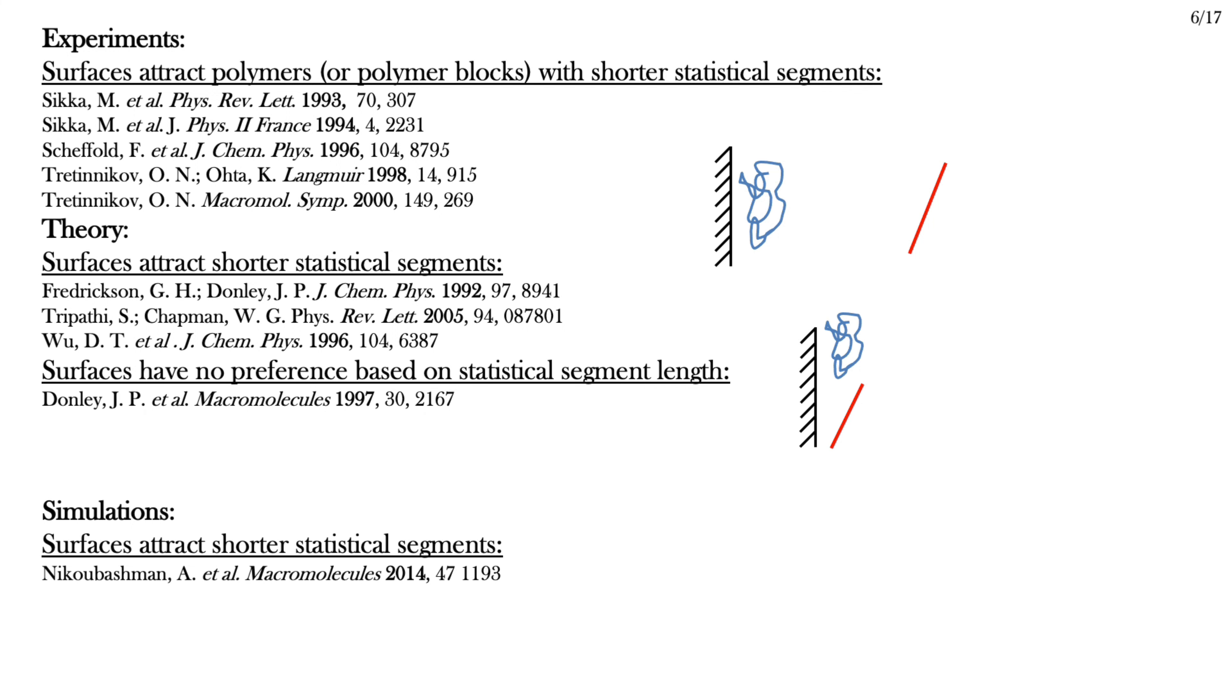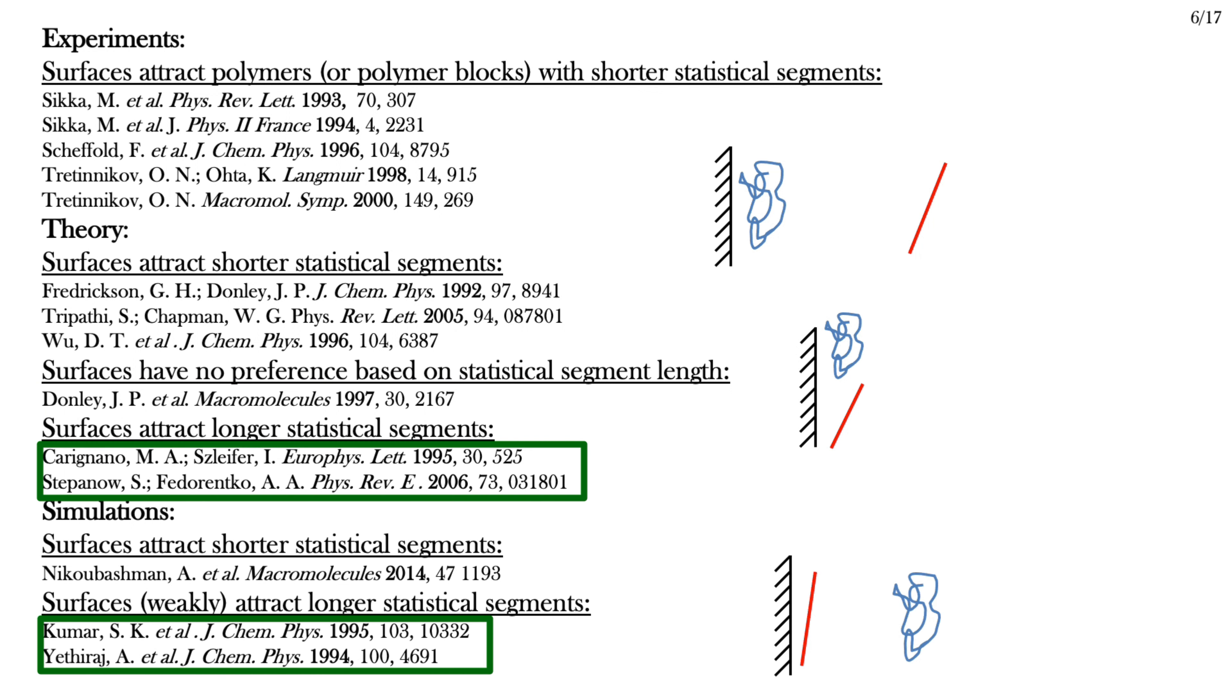Not everyone agrees that shorter statistical segments should go to the wall. These theoretical calculations, for example, find no preference. These calculations, and these simulations, on the other hand, find that the wall attracts the longer statistical segments. The literature seems a little confused. You might argue that experiment is king. If your simulations or calculations disagree with experiments, then they're simply wrong. But this is a little naive. Experiments use real molecules with real, complicated interactions. It's difficult to isolate just the entropic effects, which can be subtle, from the enthalpic effects, which might alter the preference.